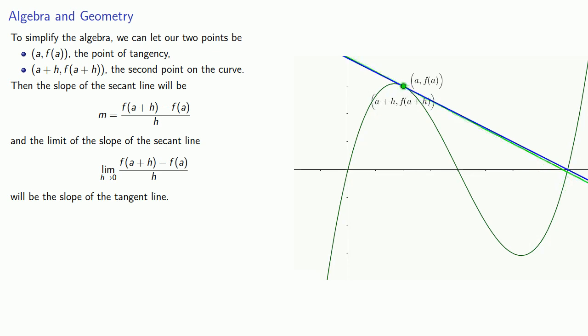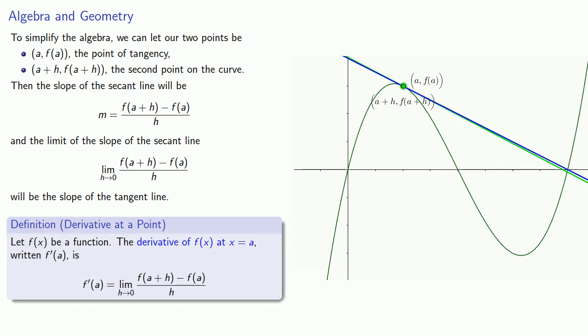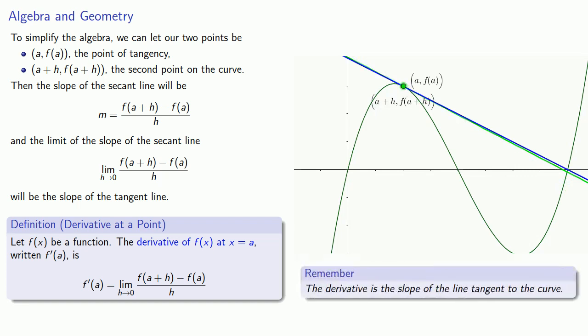And this is what we now call the derivative at a point. This formula might seem to be a bit mysterious, but all it really is, is the limit of the slope of the secant line. And here's an important idea: If you only learn one thing in calculus, you probably failed the course. But among the things you should learn in calculus is that the derivative is the slope of the line tangent to the curve.